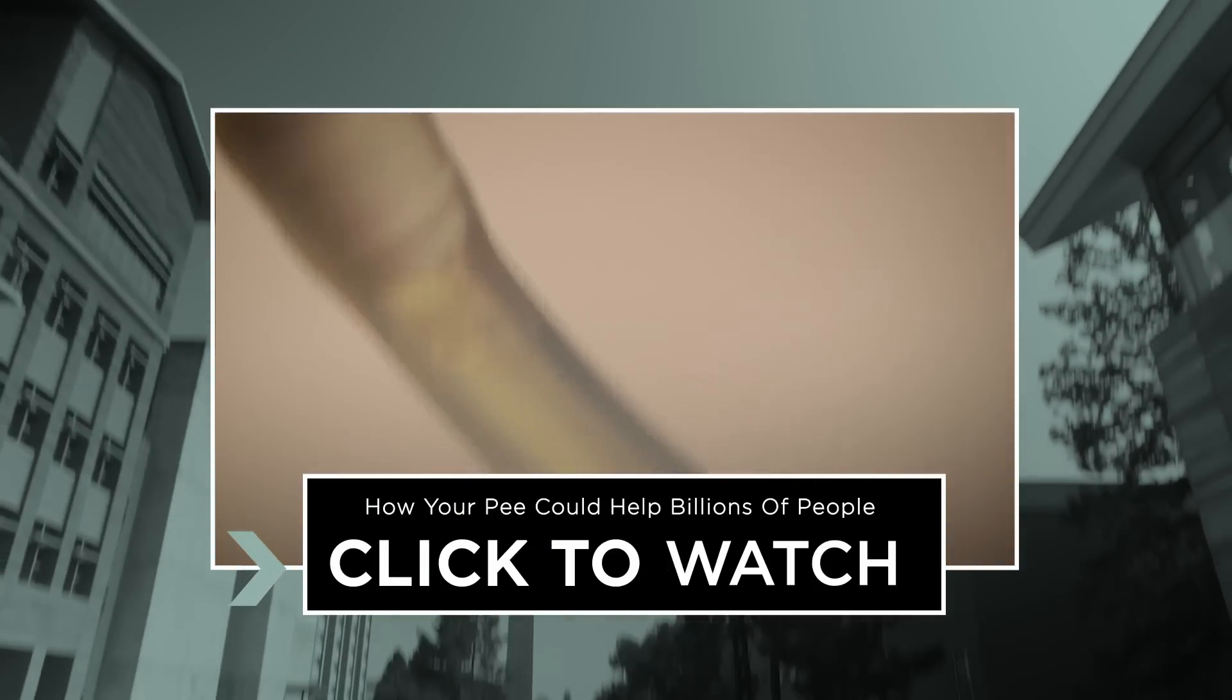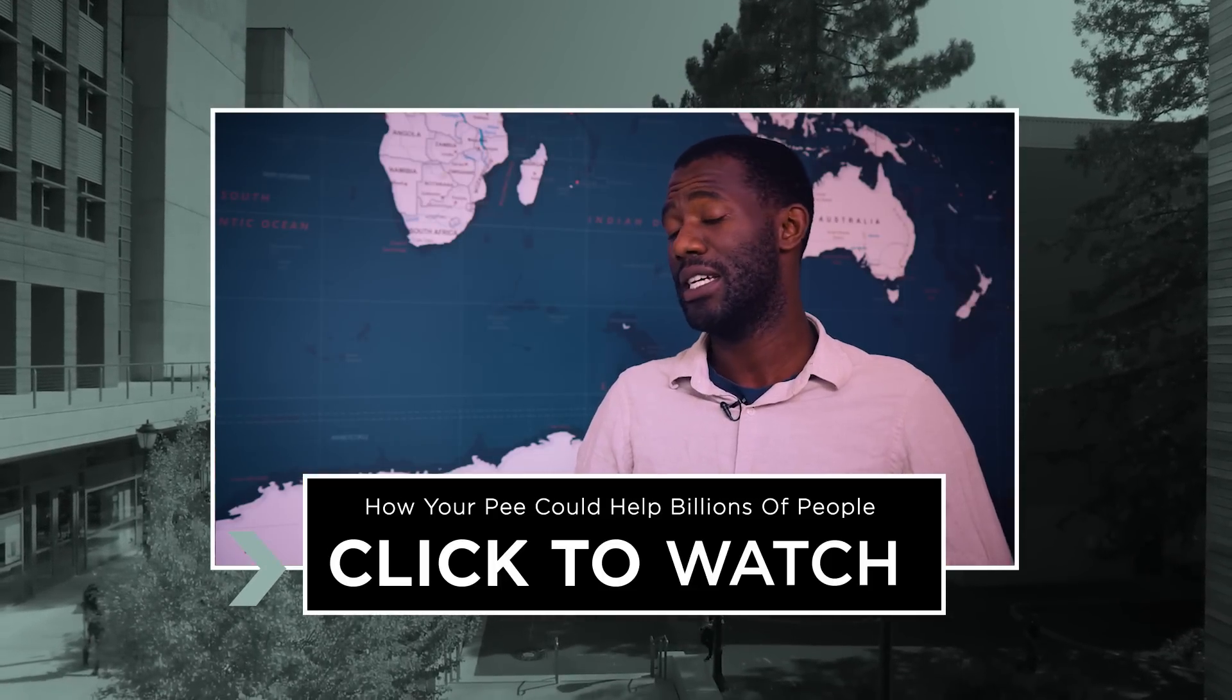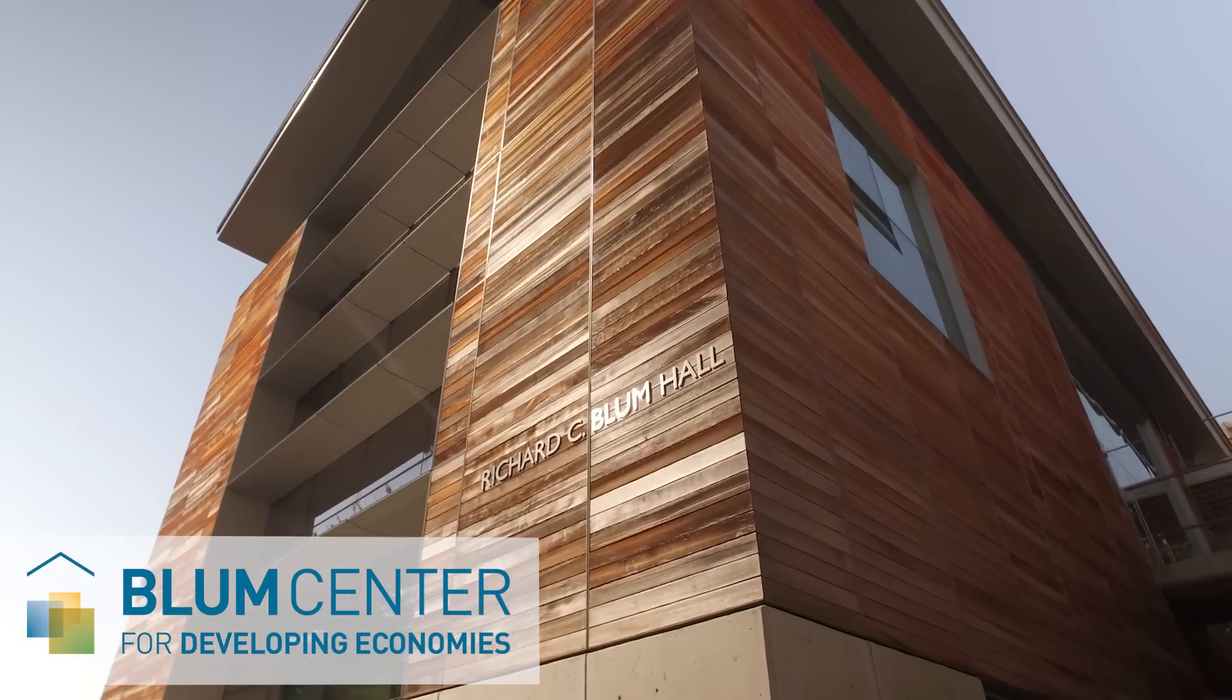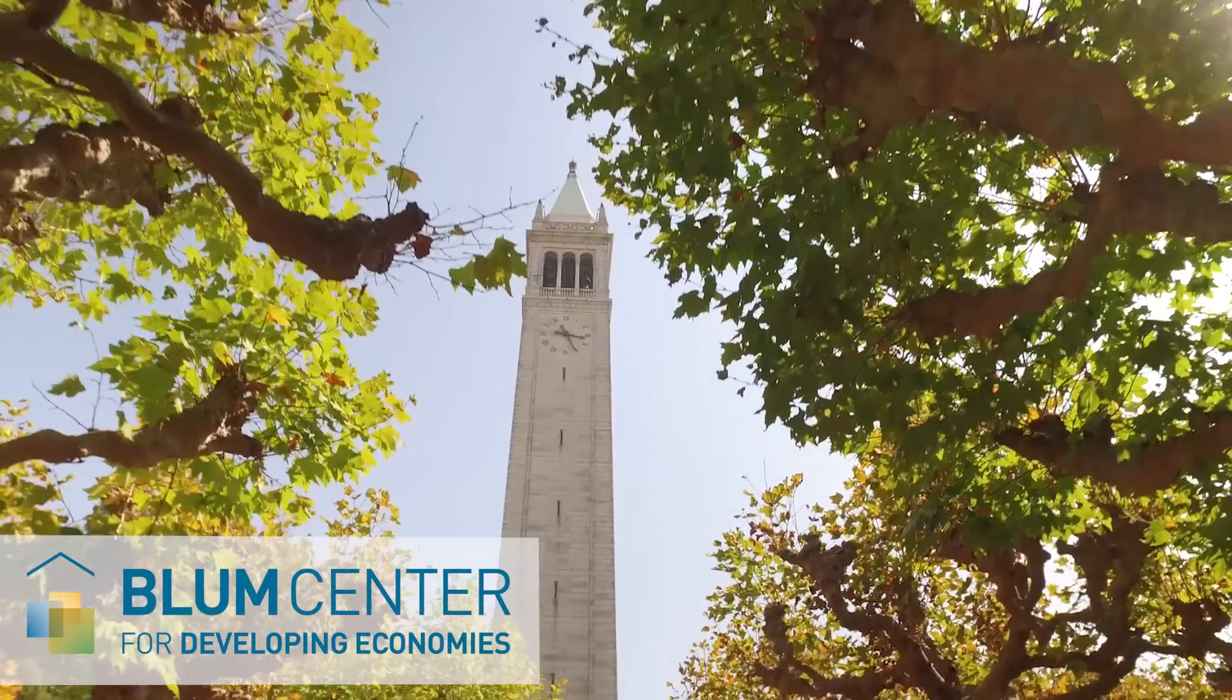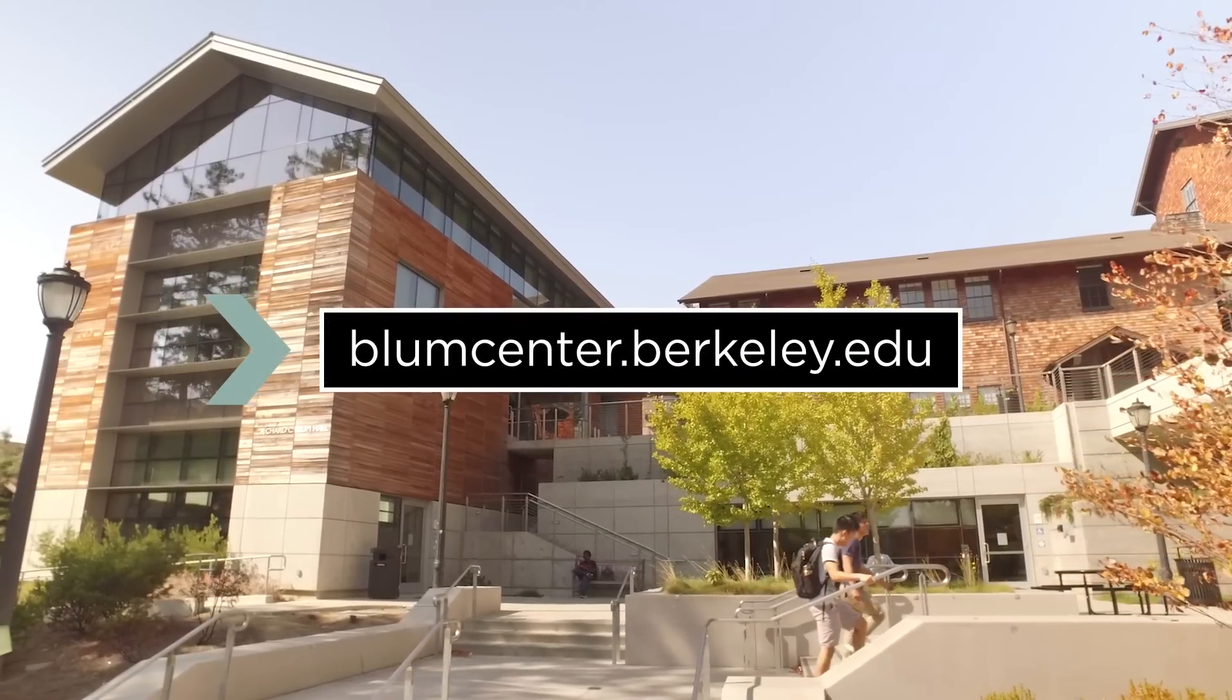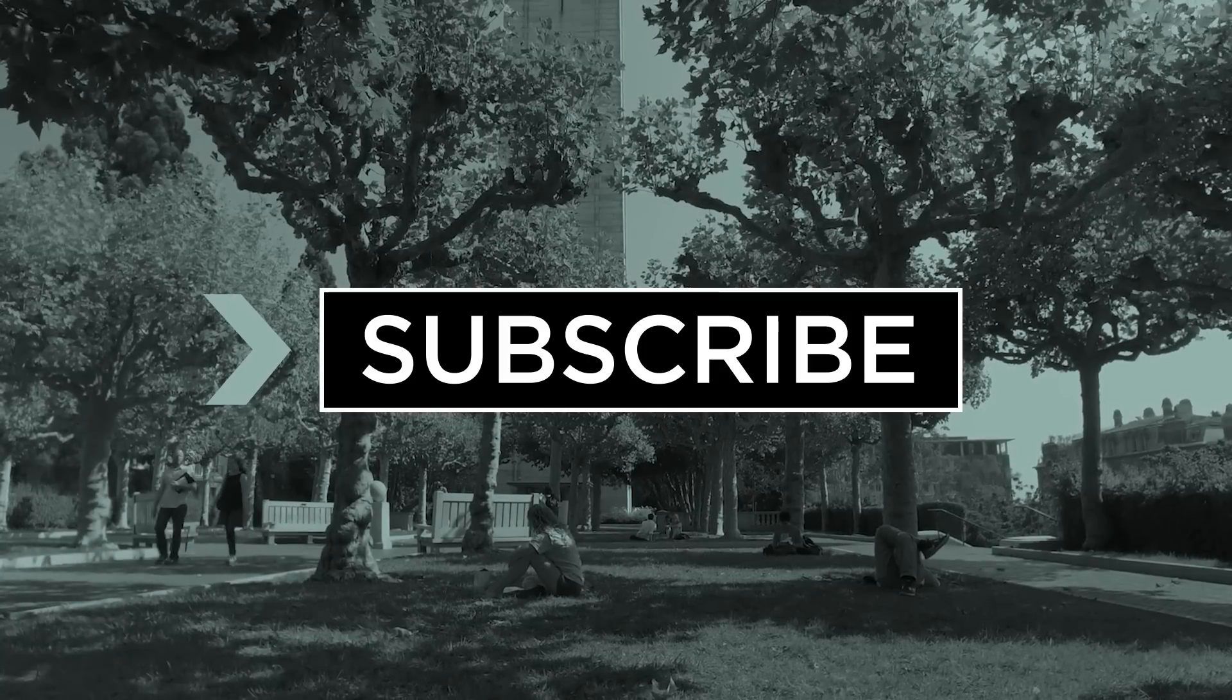William Tarpe is another scientist at Berkeley who's created a groundbreaking innovation. Watch this DNews episode to learn about how he's turning pea into fertilizer to help feed the world. We want to take a moment to thank our partner, the Blum Center for Developing Economies at the University of California, Berkeley, an innovation and research hub that's tackling issues in global poverty. Make sure to check out some of their incredible work by visiting blumcenter.berkeley.edu. Thanks for watching, and please don't forget to subscribe to Seeker Stories.